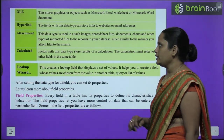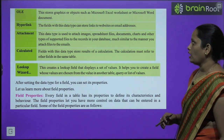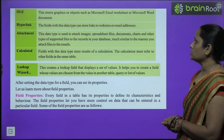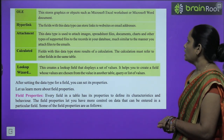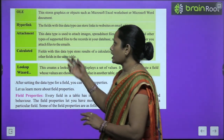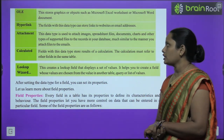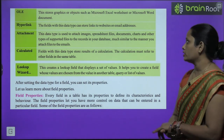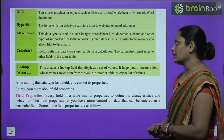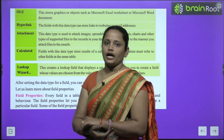Next comes OLE, which stores graphics and objects such as MS Excel worksheets and MS Word documents. Then comes Hyperlink — this data type stores links that lead to websites or email addresses. Then comes Attachment, in which you can insert attachments such as images, spreadsheets, documents, and charts.